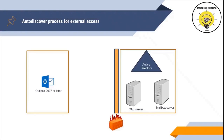When a user is on a non-domain-joined machine or using an external network, Outlook will first try to locate the Autodiscover service by looking for SCP objects in Active Directory. Because the client is using an external network, it will not be able to connect to Active Directory. So Outlook will try to locate the Autodiscover service using domain name system or DNS, using the domain suffix from the user's email address.